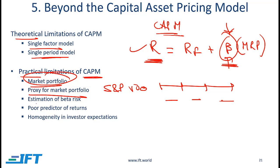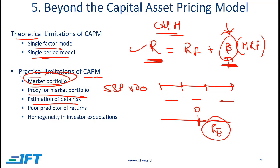Then we have issues related to estimation of beta risk. One point is that CAPM is a forward-looking model — an ex-ante model — in the sense that we are predicting an expected return. But CAPM is based on beta, and beta is often calculated based on historical returns. So beta is an ex-post variable, whereas what we are coming up with is ex-ante.